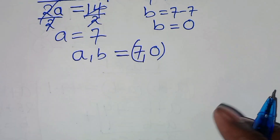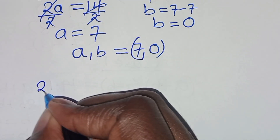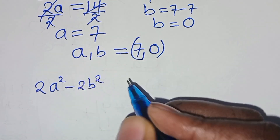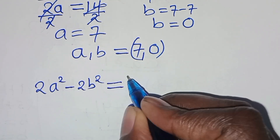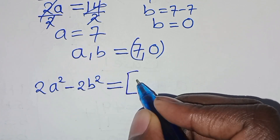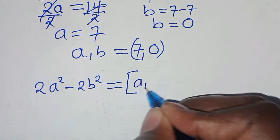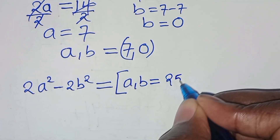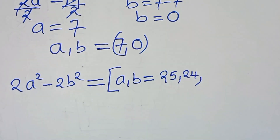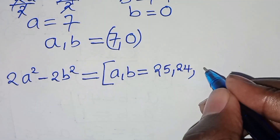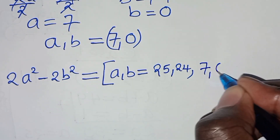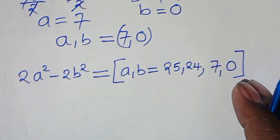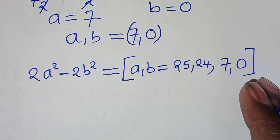So (a, b) = (7, 0). Therefore, for 2a² − 2b² = 98, the complete solution set is (a, b) = (25, 24) and (a, b) = (7, 0). These are the sets of solutions for this algebra problem.